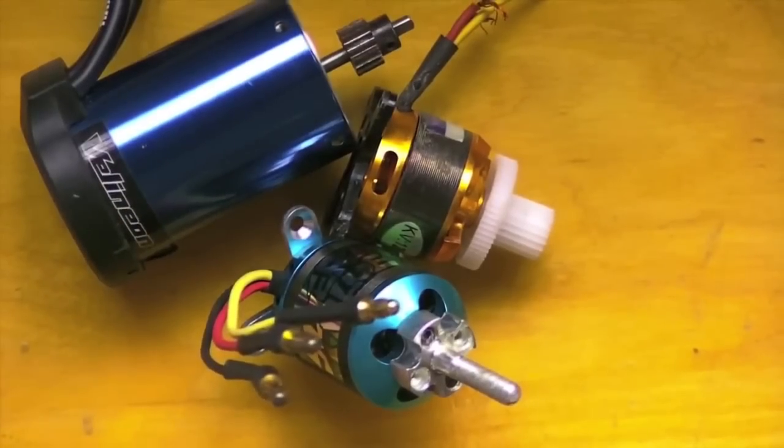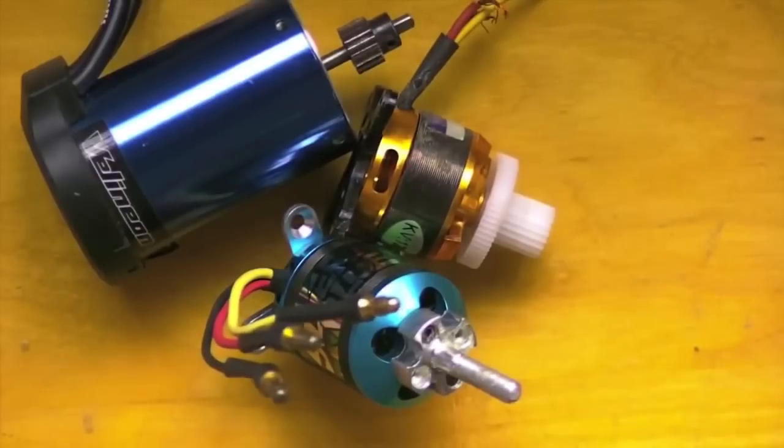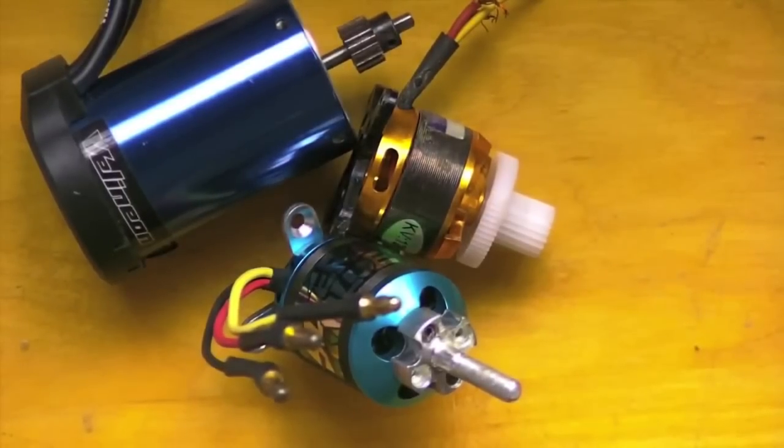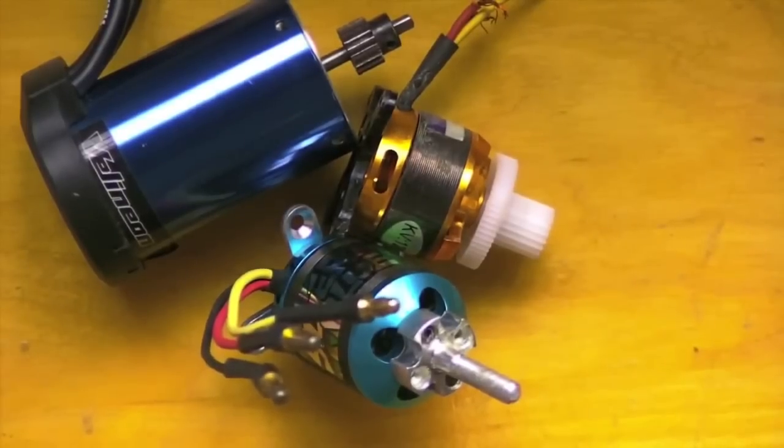In-runners have the rotor on the inside of the stator, while out-runners have it outside the stator. In-runners produce less torque but have higher RPMs. Out-runners are just the opposite and produce higher torque but at lower RPMs.